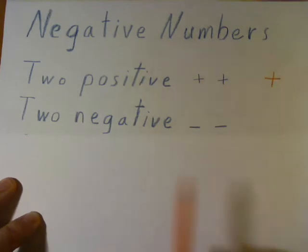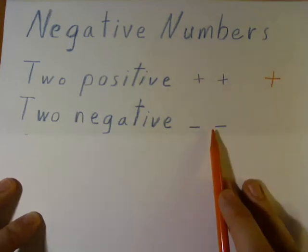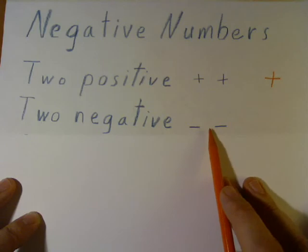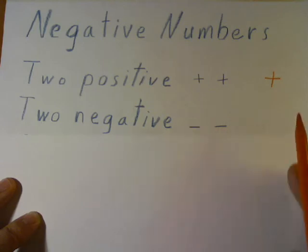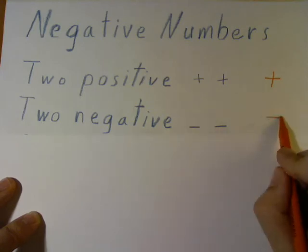When we have two negative numbers, when we multiply two negative numbers or divide two negative numbers, or have two negative numbers in a fraction, we always get a positive number.